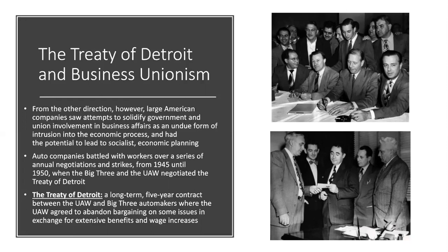This led the UAW in 1950 to negotiate the Treaty of Detroit — a long-term five-year contract with the Big Three automakers, where the UAW agreed to abandon their specific rights to bargain on certain issues in exchange for extensive benefits and wage increases. Businesses said absolutely no to negotiating production control; unions really wanted it since it had worked well during World War II; the truth was probably somewhere in the middle.